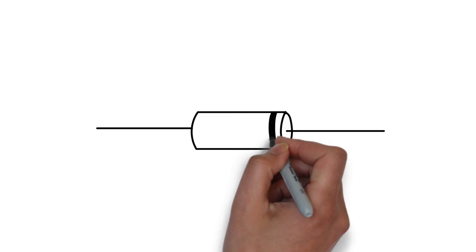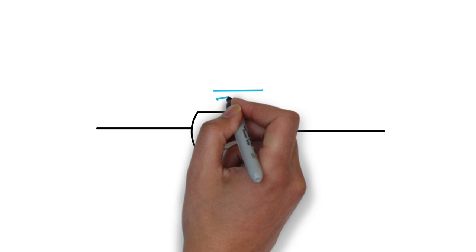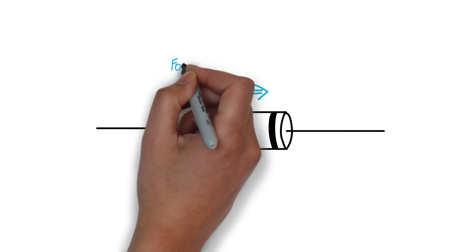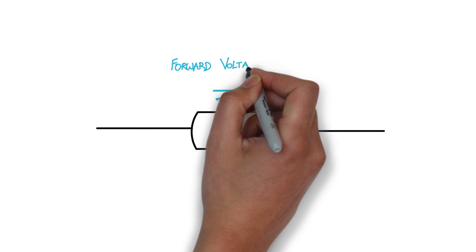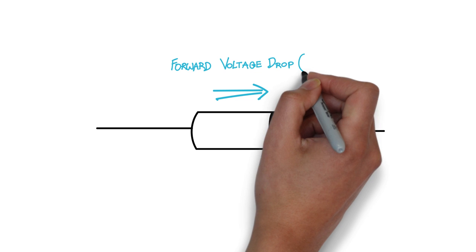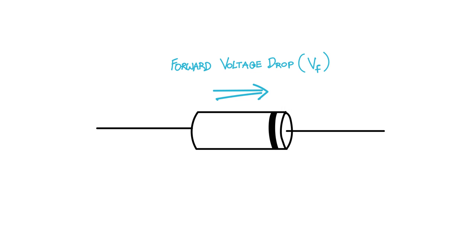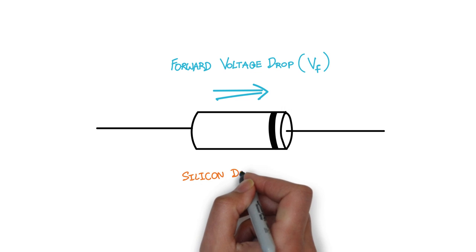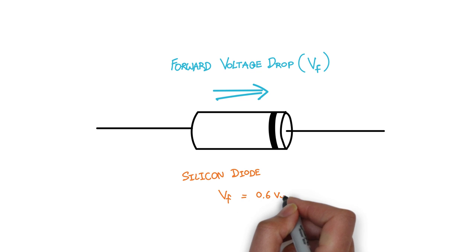For a typical diode, a certain amount of forward voltage is required before any current will flow. This minimum threshold of voltage is called forward voltage drop. For typical silicon diodes, this forward voltage drop is around 0.6 V.